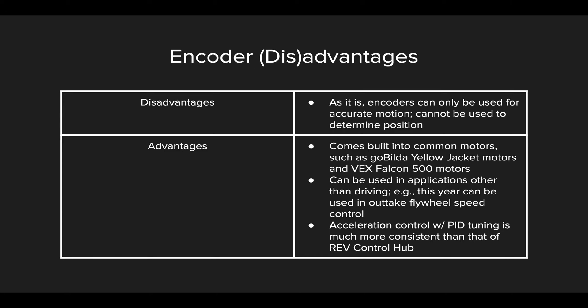Here are some disadvantages and advantages of using the encoder. Encoders are only used for accurate motion, speed, and acceleration, and without some extra code you have to write, you can't determine your position on the field. However, there are many advantages. They come built into many motors, such as the commonly used GoBILDA Yellow Jacket motors and many VEX motors such as the Falcon 500. They can also be used in applications other than driving your robot around the field — for example, this year, if your outtake contains a flywheel, you can control the speed of that flywheel very accurately using encoders.